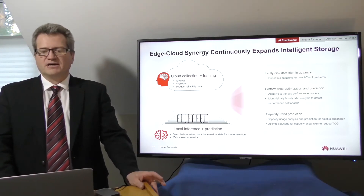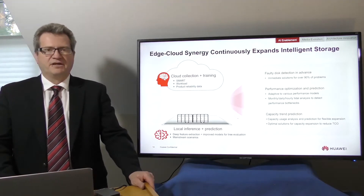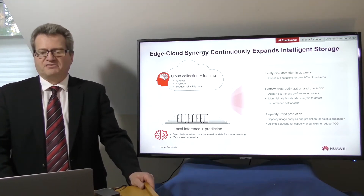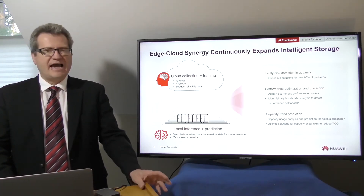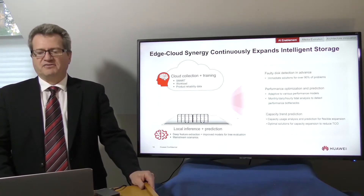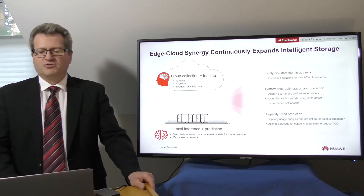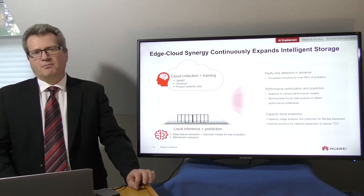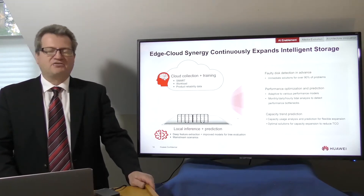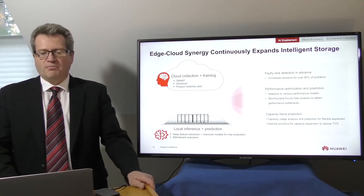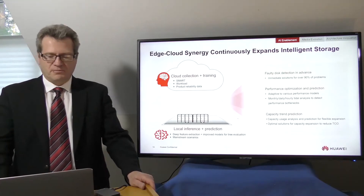This means that storage systems will be able to use the training and inference of mass models to detect things like faulty disks in advance, and that will help reduce data risks. Systems can also automatically adjust caching policies and adjust the read and write data models to adapt to different performance needs. Potential performance bottlenecks and capacity risks can therefore be predicted in advance to protect service stability.